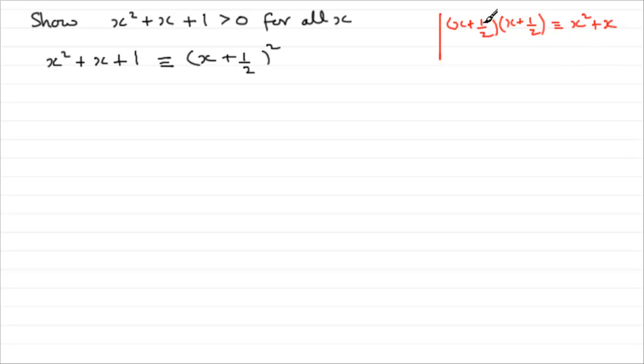But then we have half times 1 half, which is 1 quarter. So you can see we don't quite get x squared plus x plus 1. We end up with x squared plus x plus a quarter. So what do I need to add to that quarter to bring it up to 1? Well, it's clearly got to be another 3 quarters. So we just need to add 3 quarters.